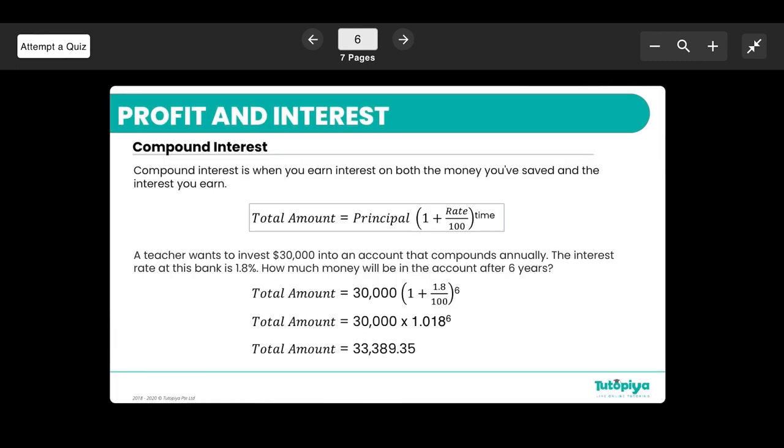Moving on, the next thing is compound interest. Compound interest is when you earn interest on both the money you've saved and the interest you earn. How do we do that? Total amount equals principal open bracket 1 plus rate over 100 to the power of time. If we look at the example: a teacher wants to invest $30,000 into an account that compounds annually. The interest rate at this bank is 1.8%. How much money will be in the account after six years?